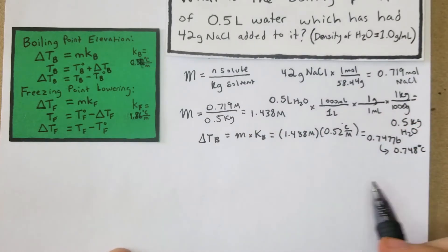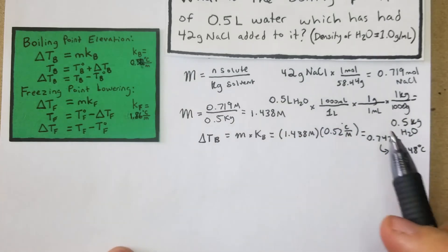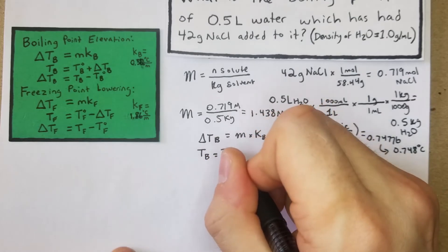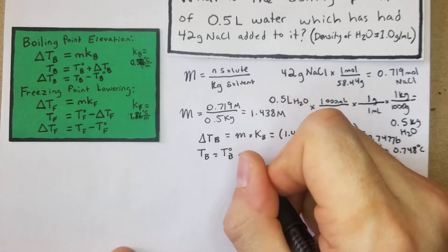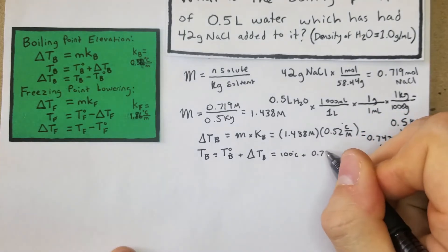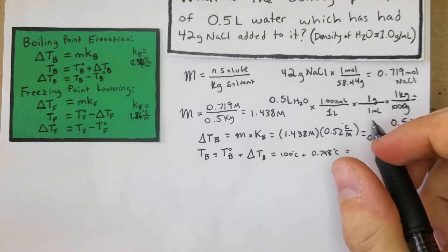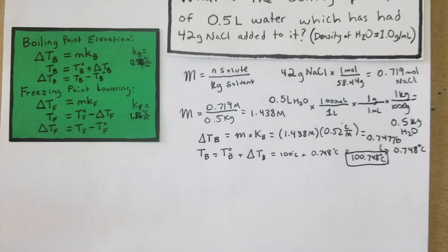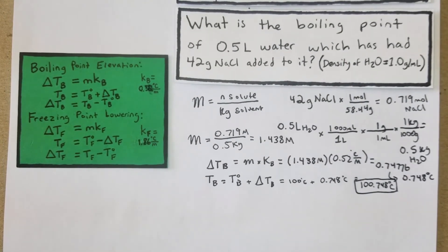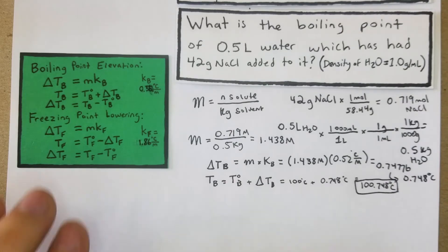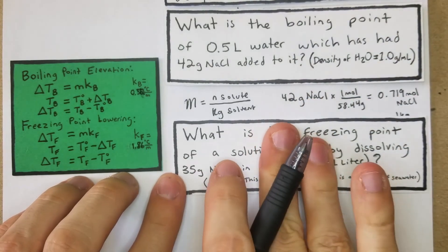The question asks for the boiling point — not just the change. So we plug it into the final formula: 100°C + 0.748°C = 100.748°C. That is the boiling point. This is like the pasta example from the beginning — add a little salt and the boiling point is higher, so pasta doesn't get sticky.